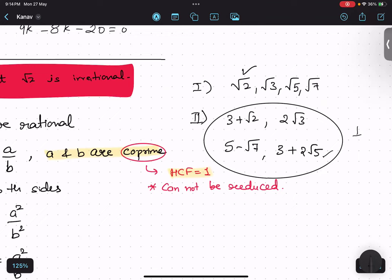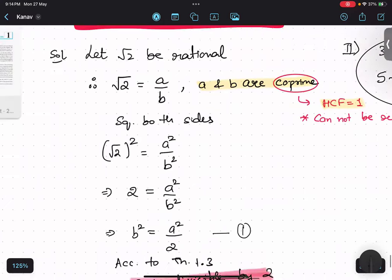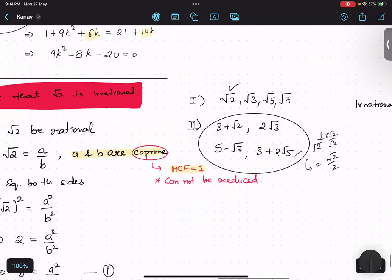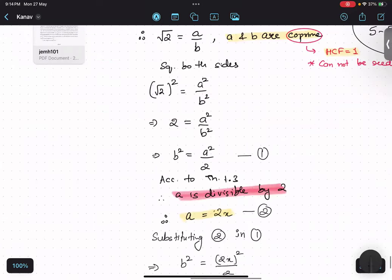Even 1 upon root 2 is the same. If I multiply by root 2, divide by root 2, it will be root 2 upon 2. So even this is also in the same category. Only 2 types of quotients are there: one where the root is alone, which we did earlier, and another one where we have some number getting added or multiplied or divided. I am going to show that question.